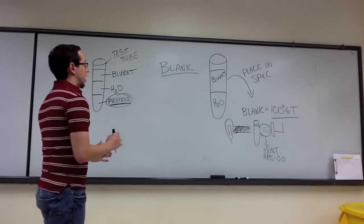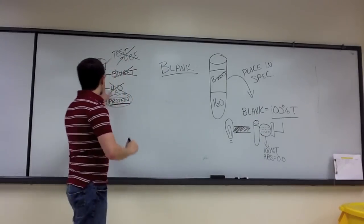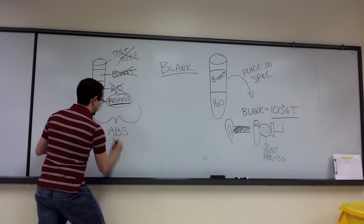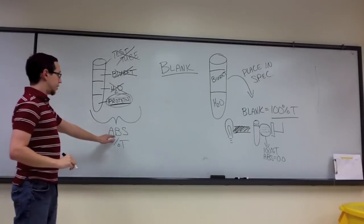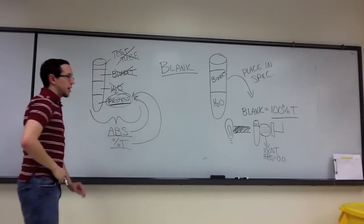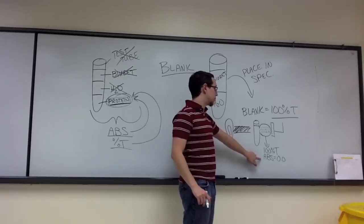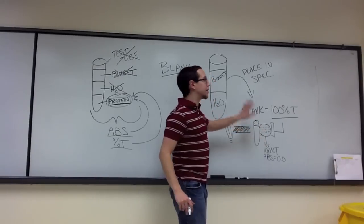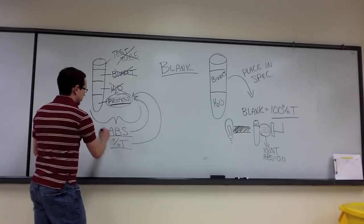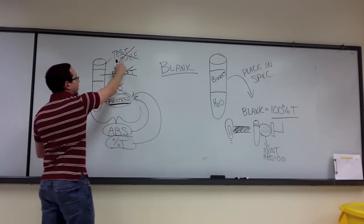We've effectively removed these elements from our final values. So when we get the absorbance and percent transmittance of the protein sample, we know those values directly correlate to the protein in the sample — not the water, not the biuret, and not the test tube — because we have negated those factors by calibrating the spectrophotometer to 100% transmittance and zero absorbance while the blank is inside. As long as we stay at the same wavelength, the absorbance and percent transmittance reflect only the protein.